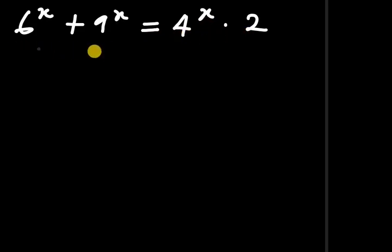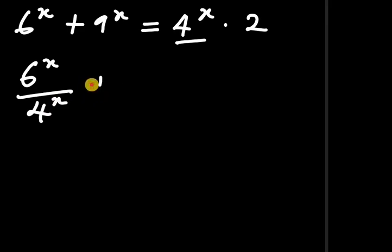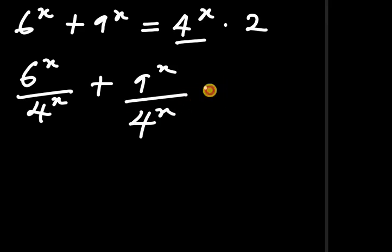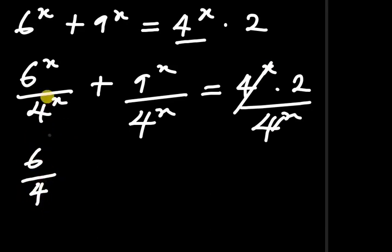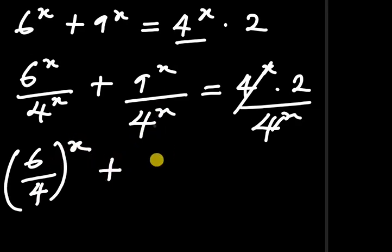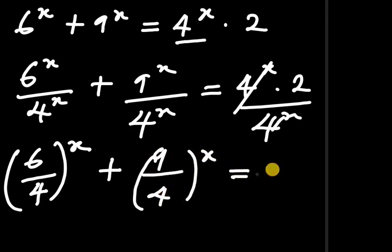The next step is to divide all sides of this equation by 4 to the power of x. So this becomes 6 to the power of x divided by 4 to the power of x, plus 9 to the power of x divided by 4 to the power of x, equals to 4 to the power of x times 2 divided by 4 to the power of x. Obviously the 4^x cancels, giving us 6 divided by 4 all to the power of x, plus 9 divided by 4 all to the power of x equals to 2.